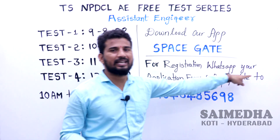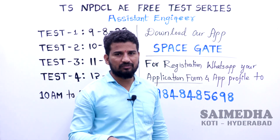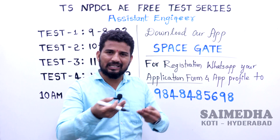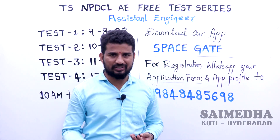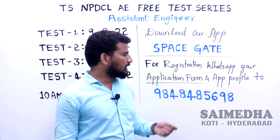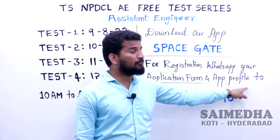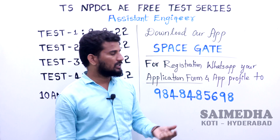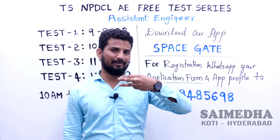For registration, you need to WhatsApp your NPDCL application form — the TS NPDCL electrical AE original application form in PDF format. The original application form has two pages; on the second page you have the application form with the photo. Please send it as a PDF only, not as a photo, as photo clarity may cause issues. The other thing you need to send to WhatsApp is your app profile screenshot from the SpaceGate app, so we can confirm the person writing the exam.